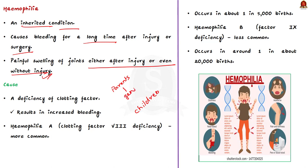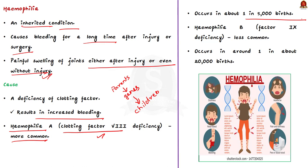What causes hemophilia? Hemophilia is due to a deficiency of clotting factor, resulting in increased bleeding. There are two types. First, hemophilia A — due to deficiency in clotting factor 8. Hemophilia A is more common and occurs in 1 in 5,000 births. The second type is hemophilia B — caused due to deficiency in clotting factor 9. Hemophilia B is less common and occurs in 1 in about 20,000 births.